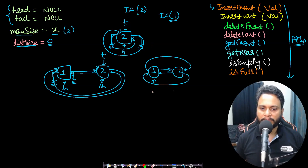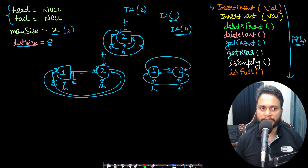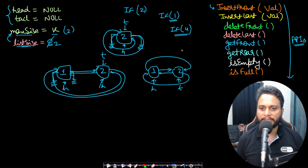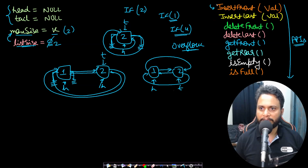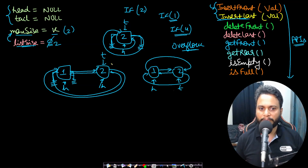After this, if insert front of 4 comes in, we must check the list size. Since we've inserted 2 nodes, the list size is 2. After every insertion we do list size plus plus and check it against max size. If list size equals max size, we cannot do any more insertions — this is the overflow case. Inserting at the last position is very similar; we just insert after the tail instead of before the head.